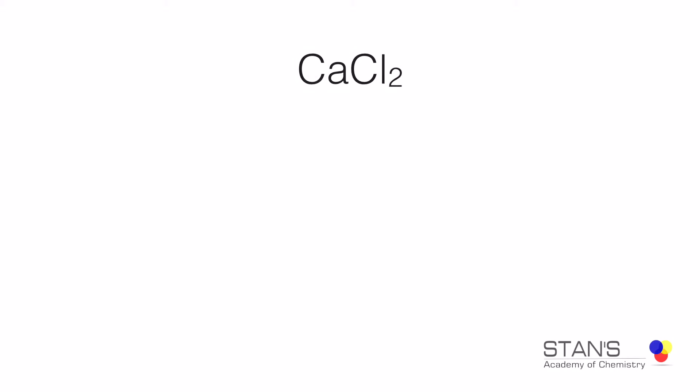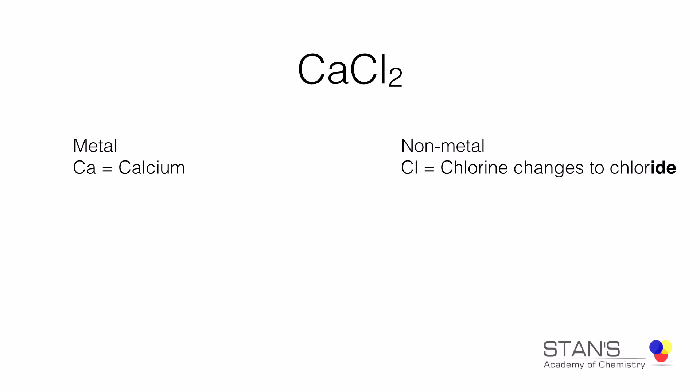Here is an example. In this compound, you have calcium and chlorine. The metal is calcium and the non-metal is chlorine. There is no change in the name of the metal, but the name of the non-metal has to end in IDE, therefore it changes into chloride. Notice that the number 2 is never mentioned in the name of the compound as we do in molecular compounds. Here, we take the total charge to be zero and for that reason we do not indicate the number of elements present in the compound. So this compound is called calcium chloride.